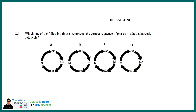A similar question was asked in IIT JAM 2019, where they asked which one of the following figures represents the correct sequence of phases in an adult eukaryotic cell cycle. The correct answer is option B: G1, S, G2, and then the mitotic phase.